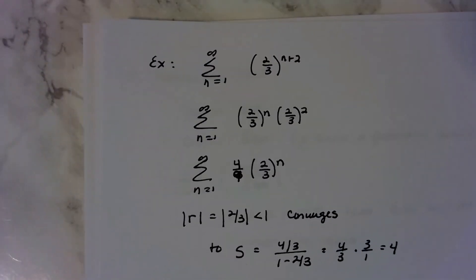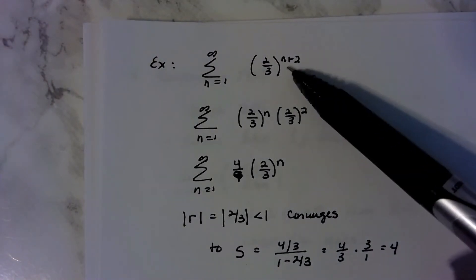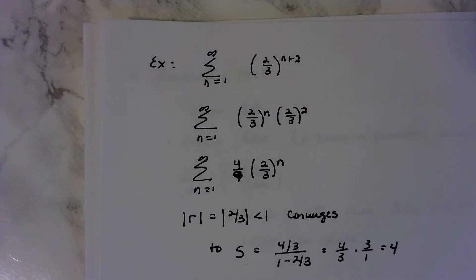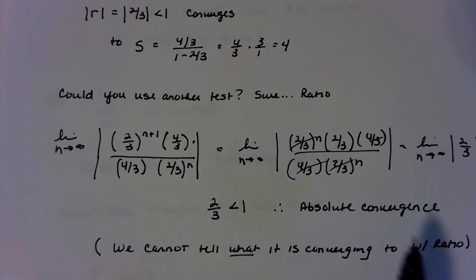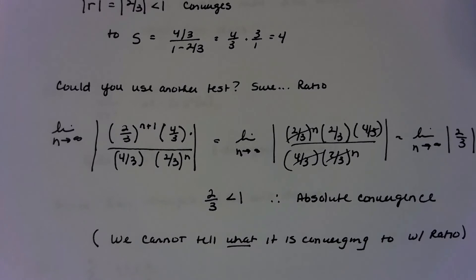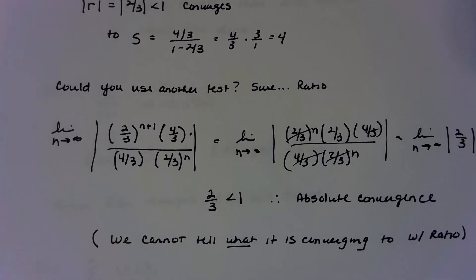Even if you didn't recognize this was geometric and used the ratio or root test, you'd still get convergence. But if you're asked on a test what something converges to, it has to be geometric — or telescoping, which is the other one where you can find what it converges to.